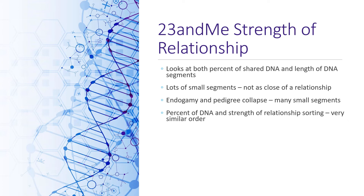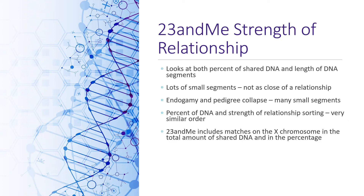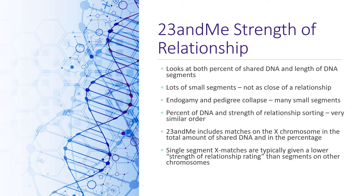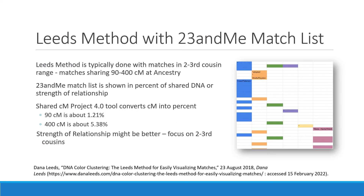23andMe includes matches on the X chromosome in the total amount of shared DNA and in the percentage. When looking at my mom's match list, whenever there was a single shared segment on the X chromosome, it was given a lower strength of relationship rating. A single X chromosome segment match was predicted as a fourth cousin, whereas somebody sharing an equal percent of DNA on the autosomal chromosomes was given a third cousin relationship rating. So 23andMe takes into account percent, segment size, and X chromosome segments when determining strength of relationship.